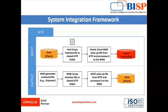We have different interfaces to perform the System Integration in the input. In the next phase, we are going to perform the output System Integration in the WMS Cloud. The WMS Cloud will generate the outbound file — for example, the shipment and the receiving. The WMS Cloud drops this interface file to the shared SFTP folder. At the end, the host, that is our client, picks up the file from the SFTP folder and processes it in the WMS Cloud. In this way, the System Integration Framework works in our WMS Cloud.